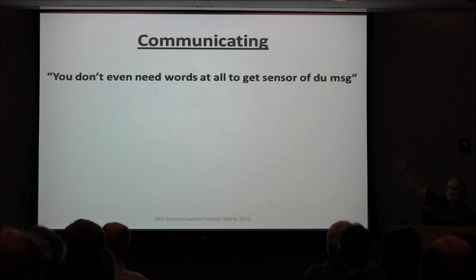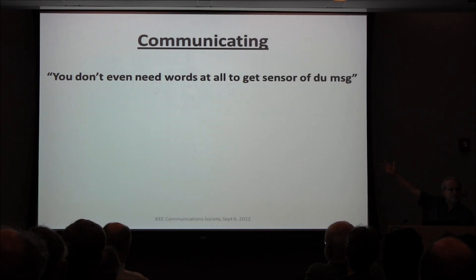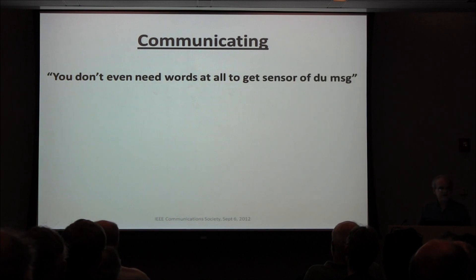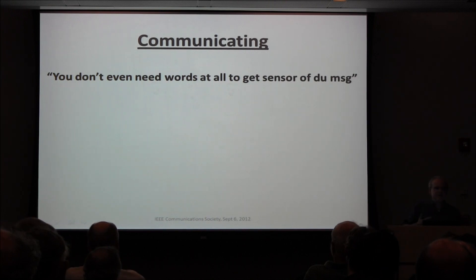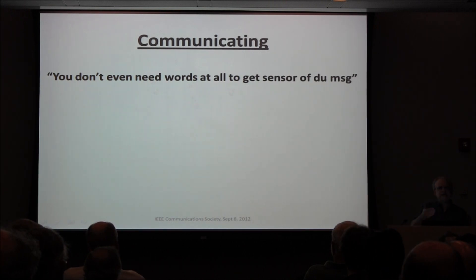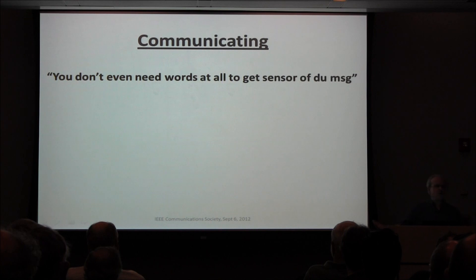That sentence in the blurb — when I wrote it I thought I knew what it meant: basically you don't even need words to get the sense of the message. But other people might have different interpretations. You cannot really control meaning — the idea that the provider along the path has control is a strange idea we've had, that the provider knows what the quality of service is.